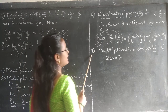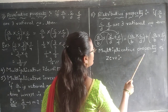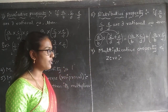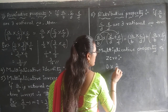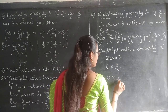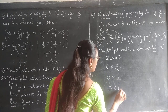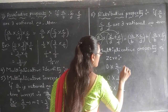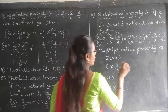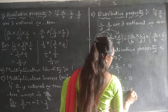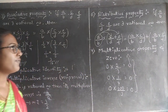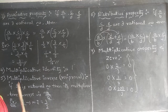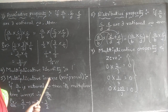The last property is the multiplicative property of 0. What is this multiplicative property of 0? If I take 0 and multiply it with any number — whether it is 2/3 or 1/4 or 100/3 — whatever the number may be, if I multiply it with 0, the product will always be 0.